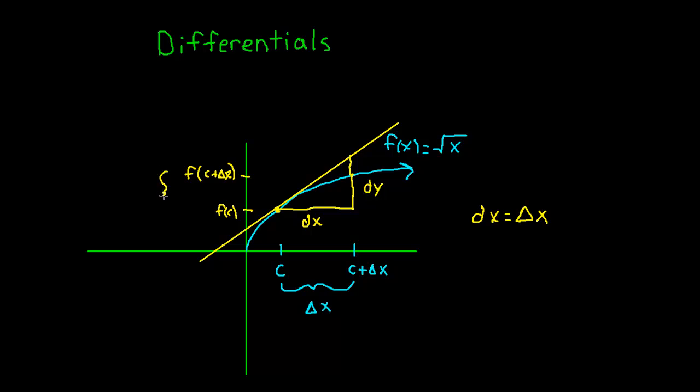What is delta y? Delta y would be this actual change from f of c to f of c plus delta x. In other words, it's just this height right here. So from right about here to here, this would be delta y. Now what you have to keep in mind is that these dx's and delta x's, dy's and delta y's, they're very, very tiny numbers. I've just kind of blown them up a little bit. So we see that dx actually equals delta x. But if you look carefully here,